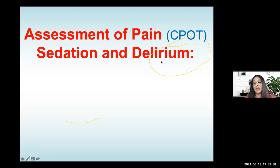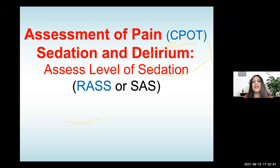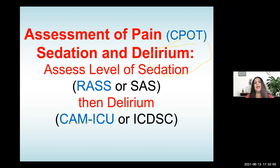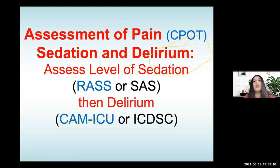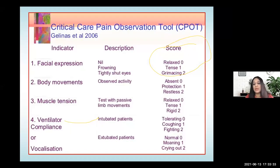The Critical Care Pain Observational Tool (CPOT) is recommended by the PADIS guidelines for pain assessment in the ICU. If you're not using this, you're not properly assessing pain. Sedation and delirium go hand in hand — you can't assess one without the other. To assess sedation level, use the RASS — the Richmond Agitation Sedation Scale — or the SAS scale, and then assess delirium using the CAM-ICU or the Intensive Care Delirium Screening Checklist (ICDSC). In our ICU, we use a combination of CPOT, RASS, and CAM-ICU.